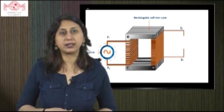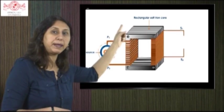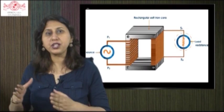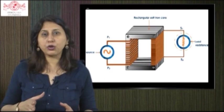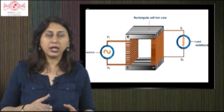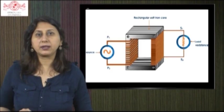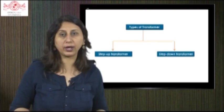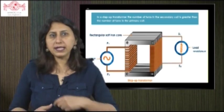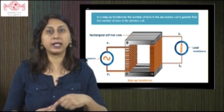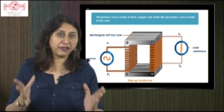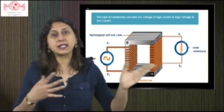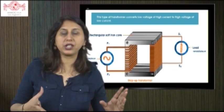The transformer consists of a rectangular soft iron core made up of laminated sheets. The sheets are well insulated from each other. Two coils P₁P₂ and S₁S₂ are wound on the same core and well insulated from each other. The AC source is connected to coil P₁P₂, which becomes the primary coil. A load resistance is connected to coil S₁S₂, which is the secondary coil. In a step-up transformer, the number of turns of the secondary coil is more than the primary coil and the wire thickness is greater in the primary coil. This type of transformer converts low voltage to high voltage at low current.